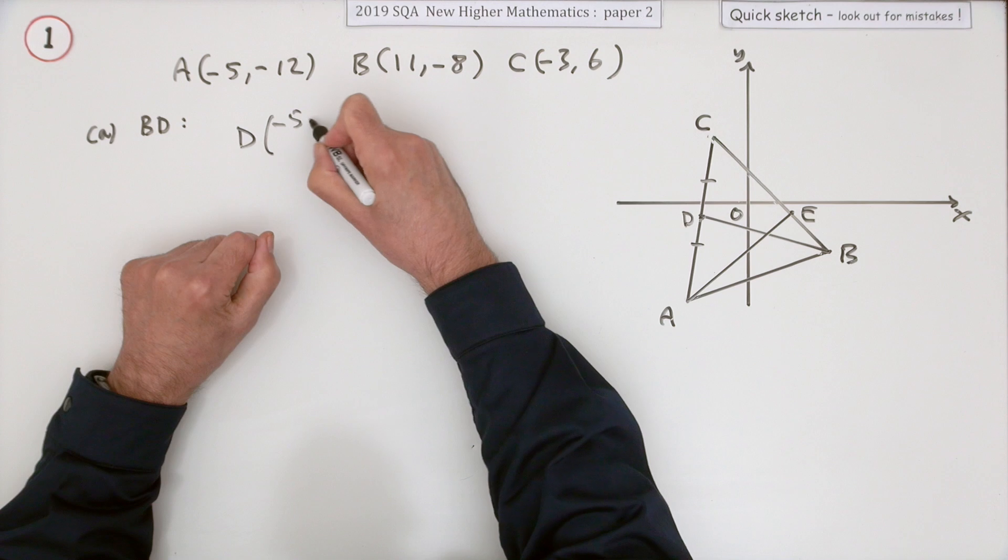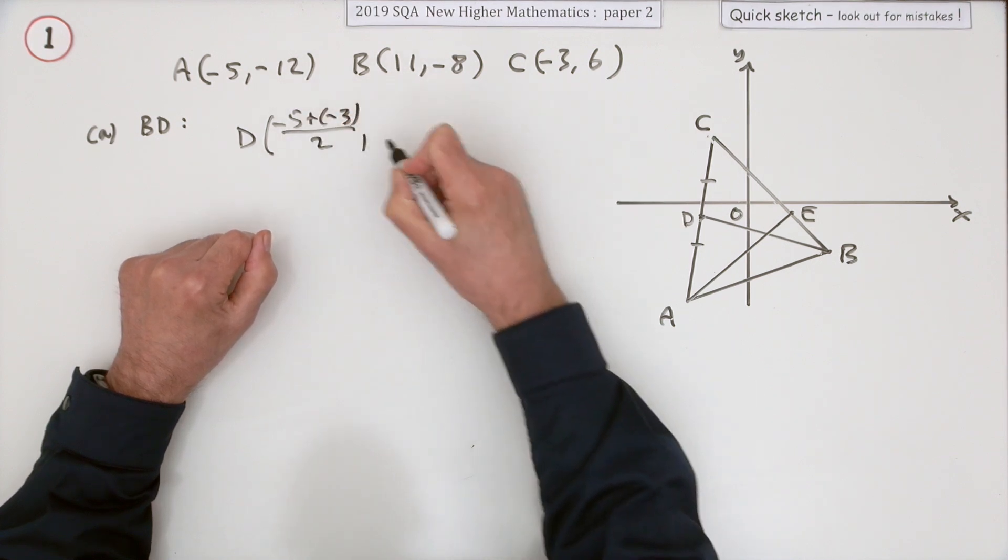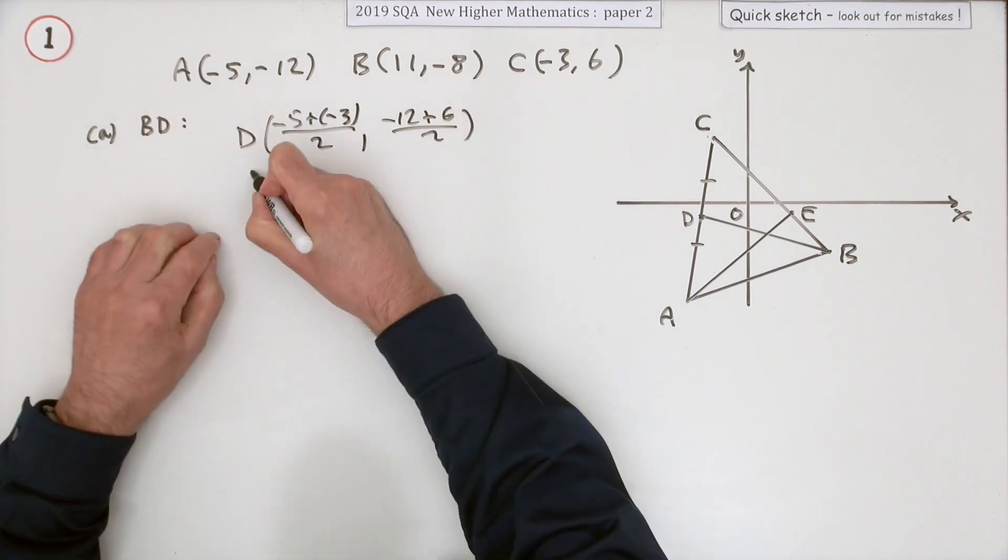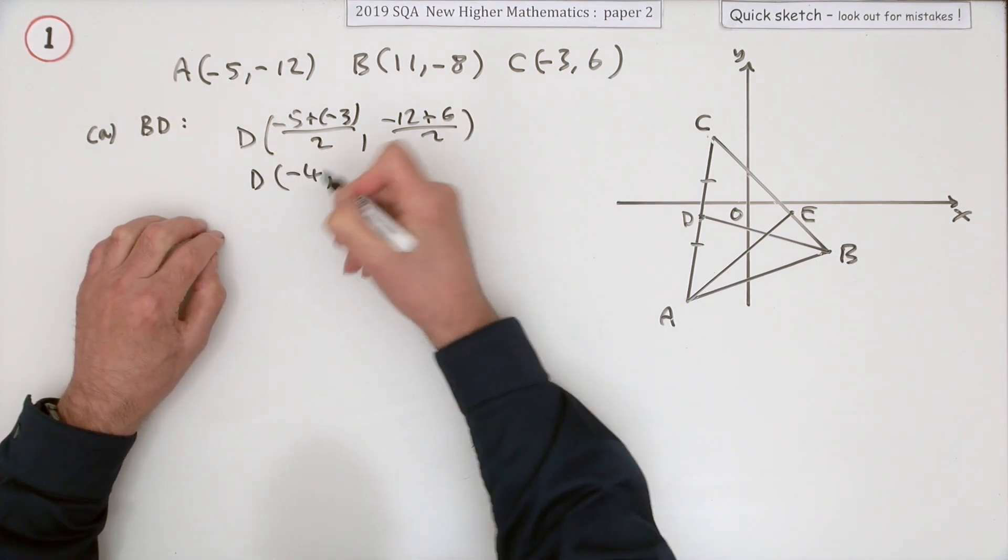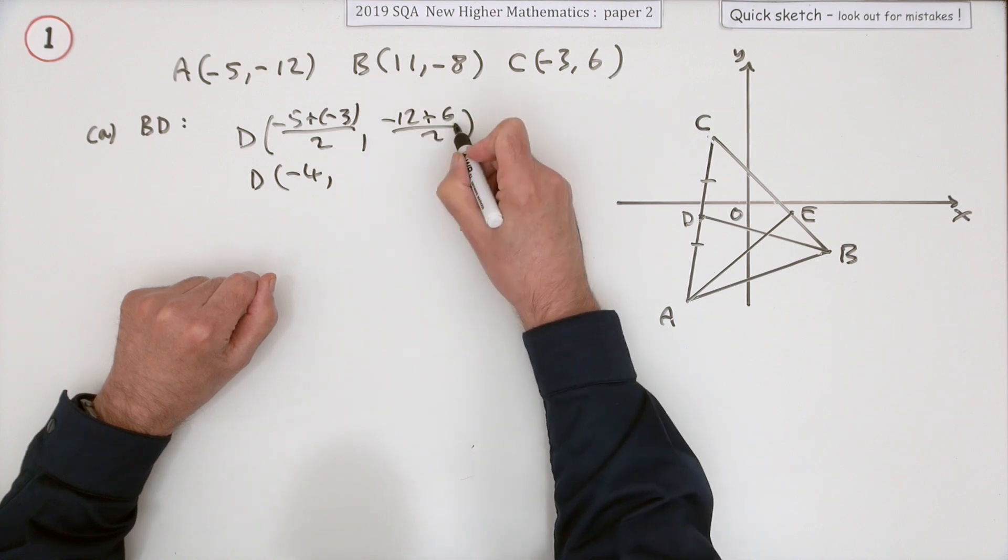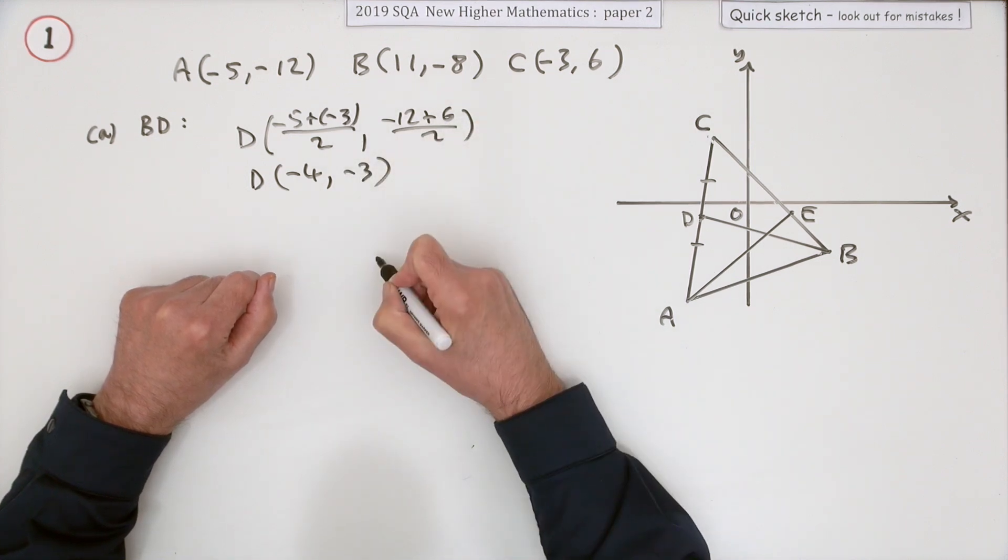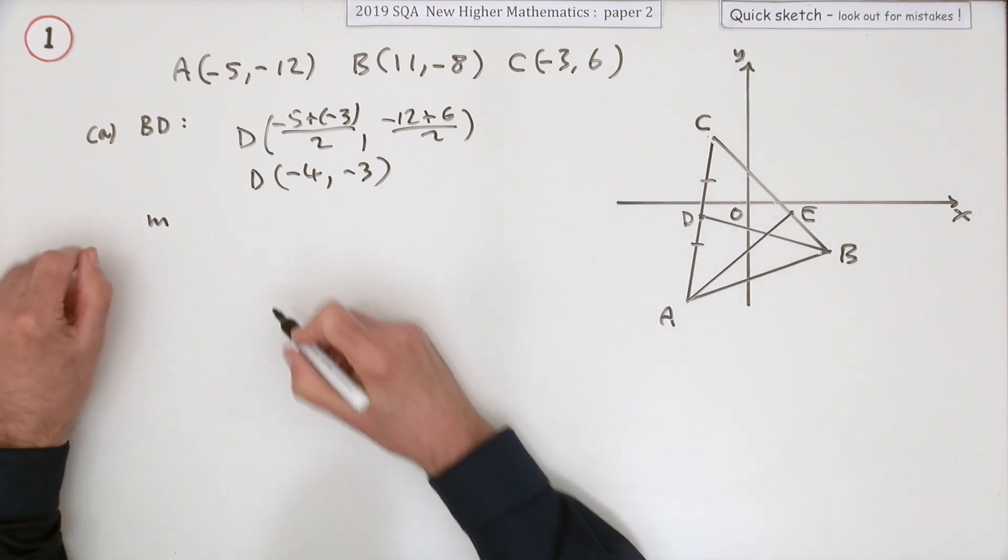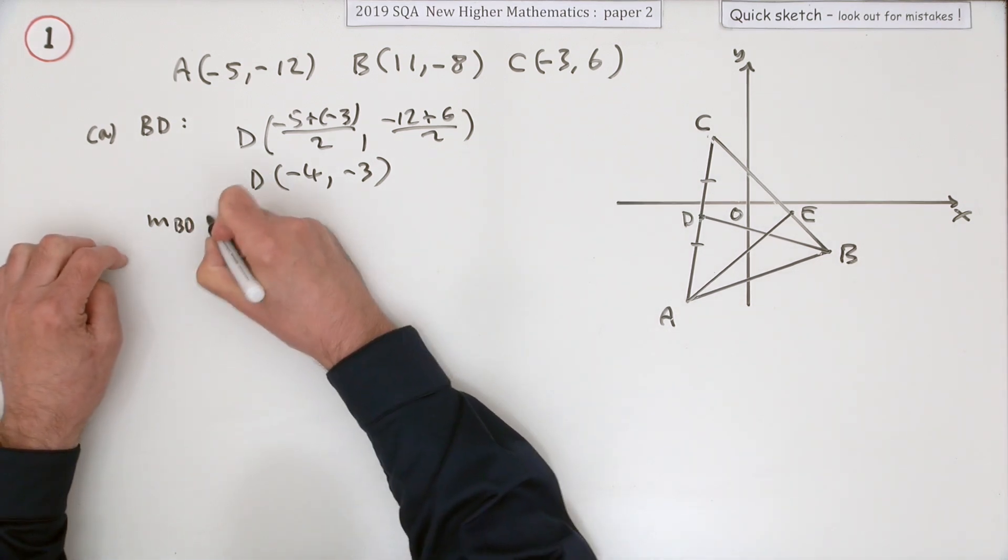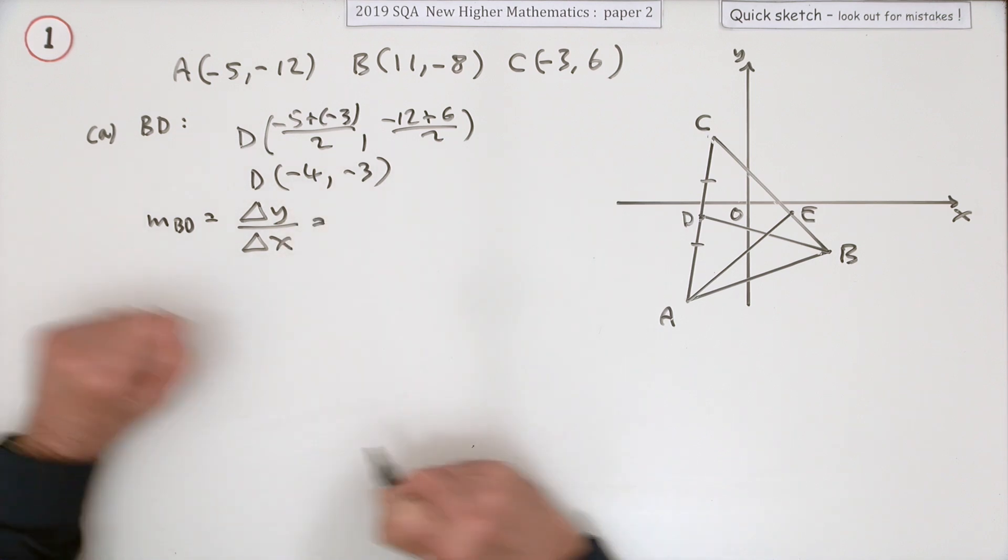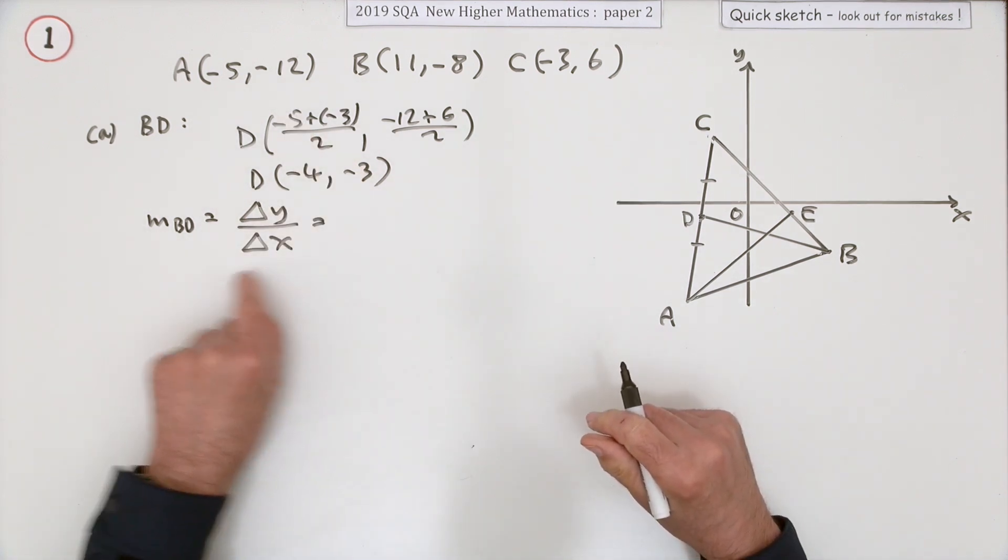I'll just put it down anyway, average of the x coordinates, average of the y coordinates. So D is going to be the point (-4, -3). That means you can now get the gradient of this line BD. It'll be the difference in the y coordinates over the difference in the x coordinates, y2 minus y1, x2 minus x1 using B and D though.